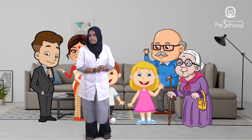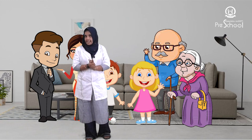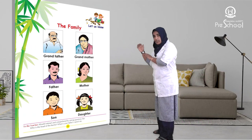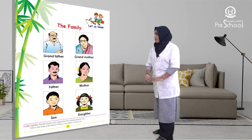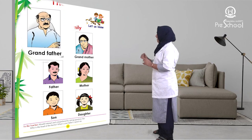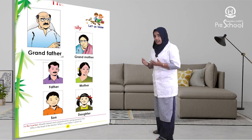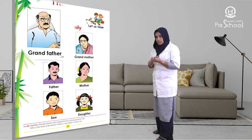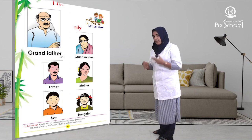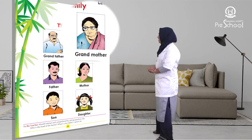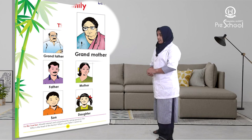Shall we say their names once again? Children, look at the board. Who is the first member? Grandfather. What is it? Grandfather. Who is the next one? Grandmother.